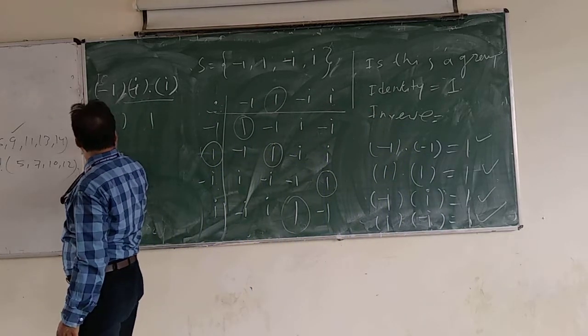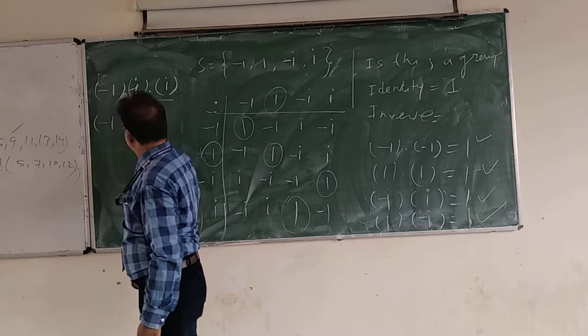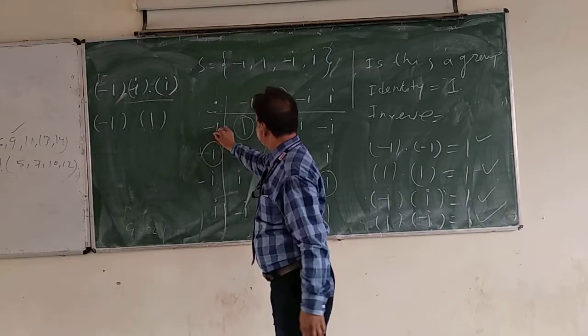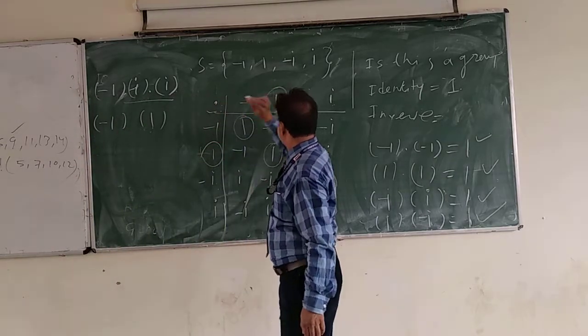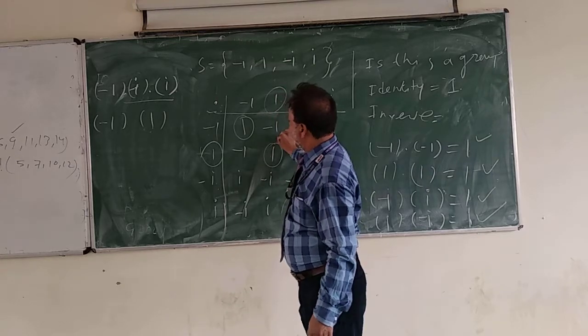Now, minus 1 multiplied by 1 — what is minus 1 multiplied by 1? We get minus 1.